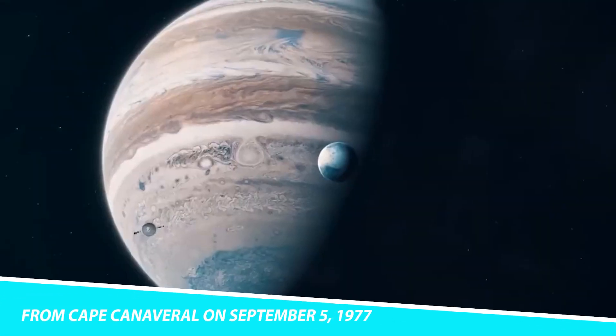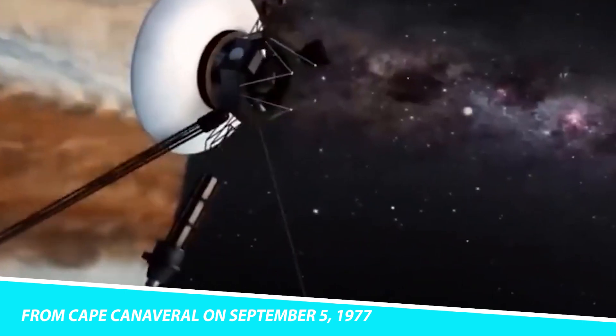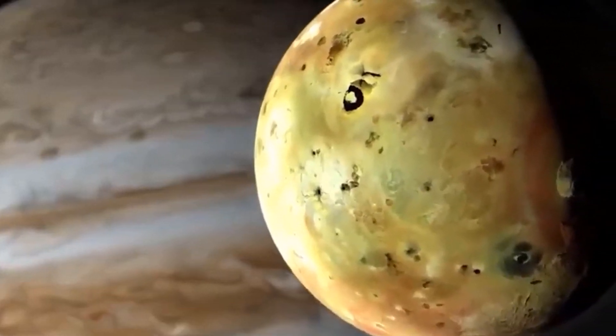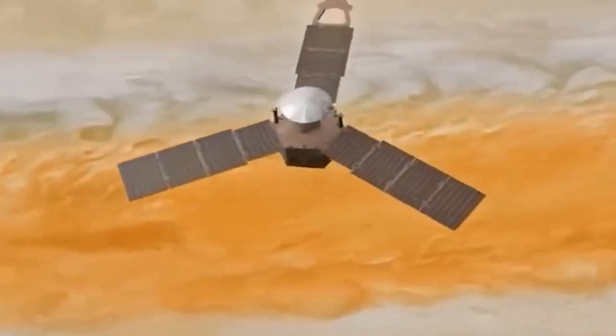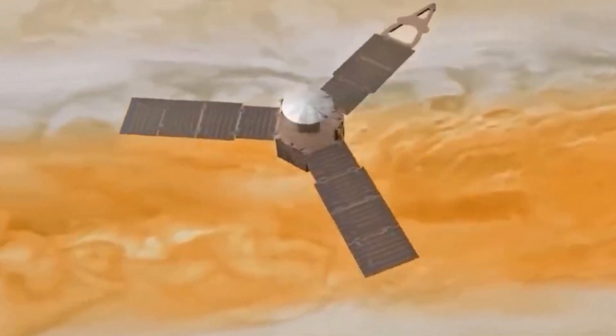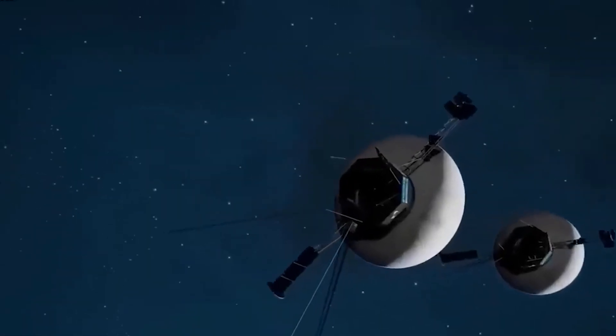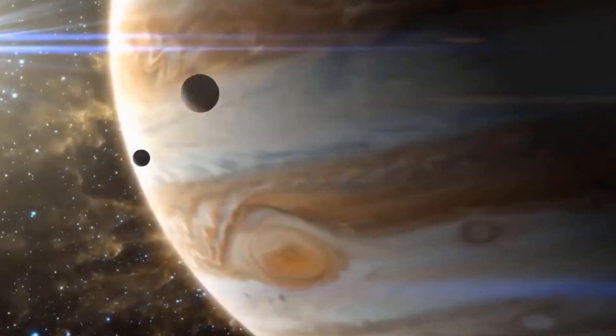Voyager 1 was launched from Cape Canaveral on September 5, 1977. The spacecraft encountered Jupiter on March 5, 1979 and Saturn November 12, 1980. Then, because its trajectory was designed to fly close to Saturn's large moon Titan, Voyager 1's path was bent northward by Saturn's gravity, sending the spacecraft out of the ecliptic plane, the plane in which all planets except Pluto orbit the Sun.